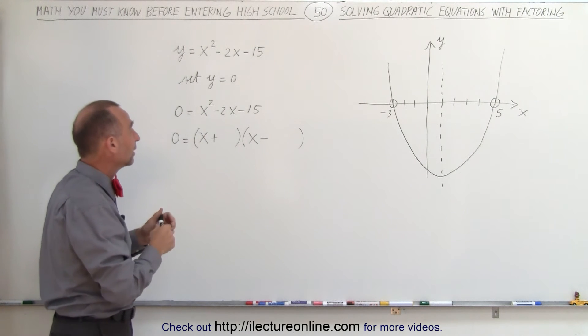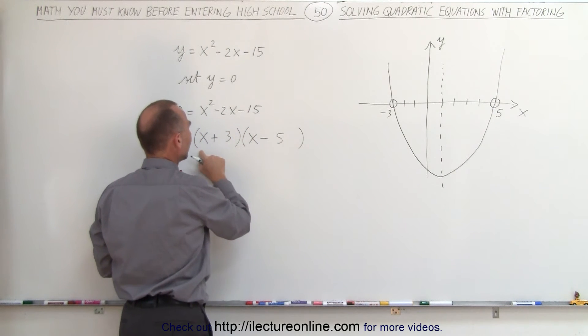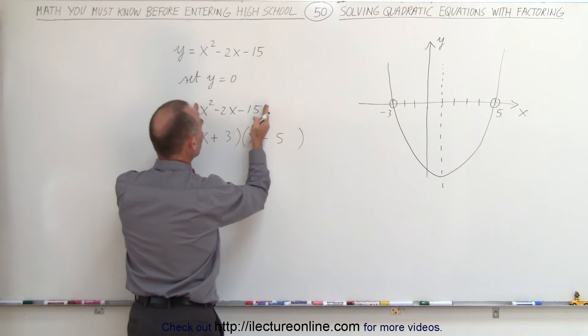If I make the larger one negative, I get negative 5 and positive 3, and this is the factored form of this particular trinomial.